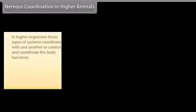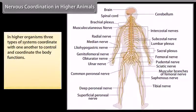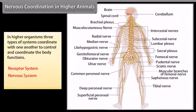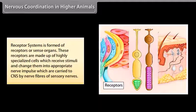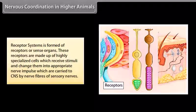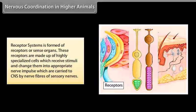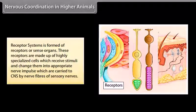Nervous coordination in higher animals. In higher organisms, three types of systems coordinate with one another to control and coordinate body functions. The receptor system is formed of receptors or sense organs. These receptors are made up of highly specialized cells which receive stimuli and change them into appropriate nerve impulses, which are carried to the CNS by nerve fibers of sensory nerves.